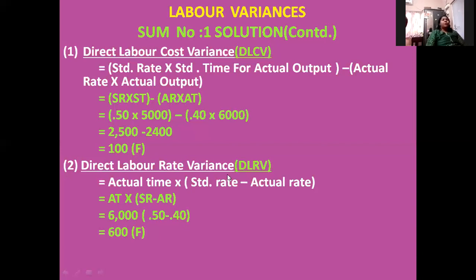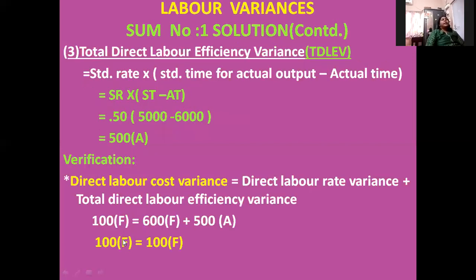Moving on to direct labor rate variance: the formula is actual time multiplied by the difference of standard rate minus actual rate. Standard rate is 0.50 and actual rate is 0.40, giving a difference of 0.10. Multiplied by actual time of 6,000 hours, you get 600 favorable.